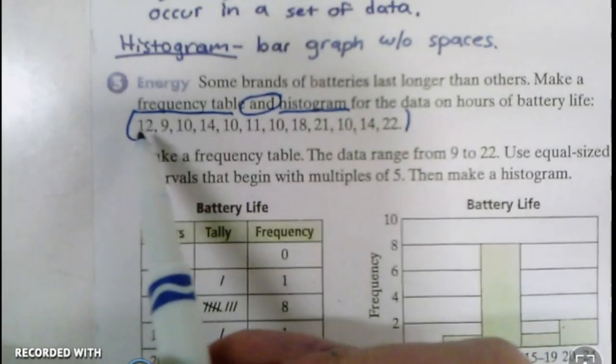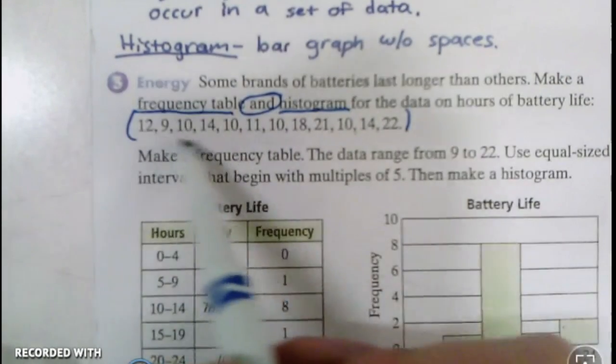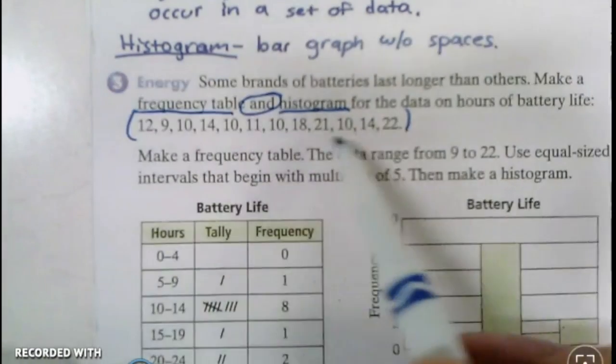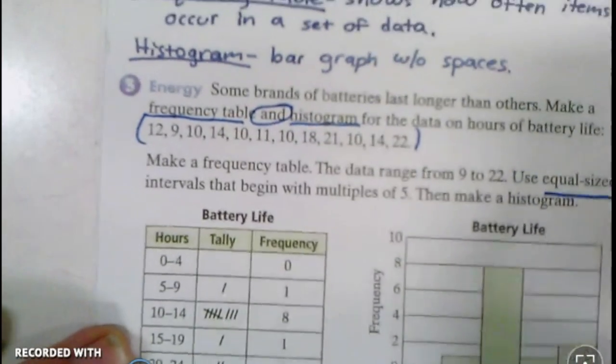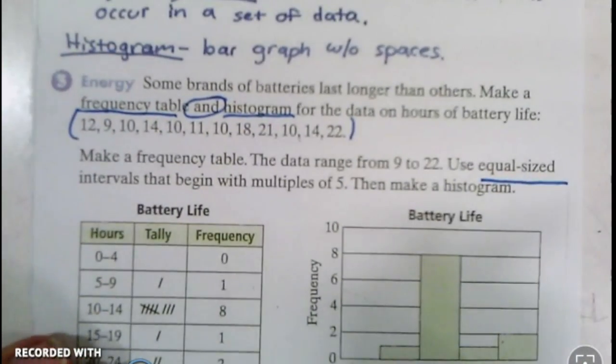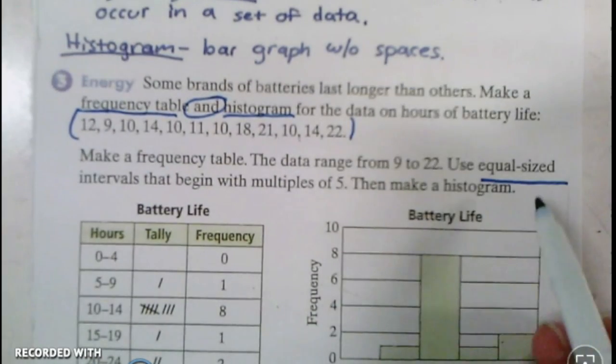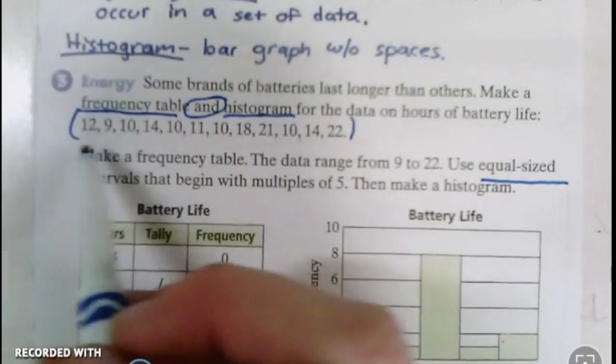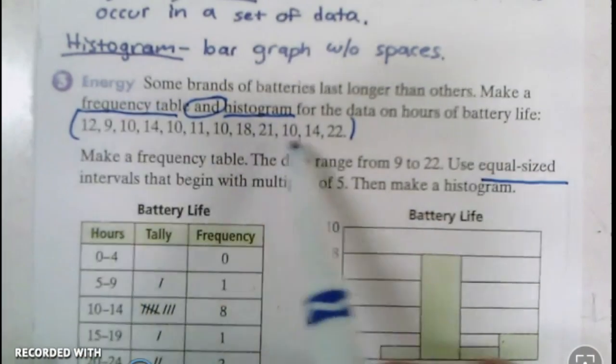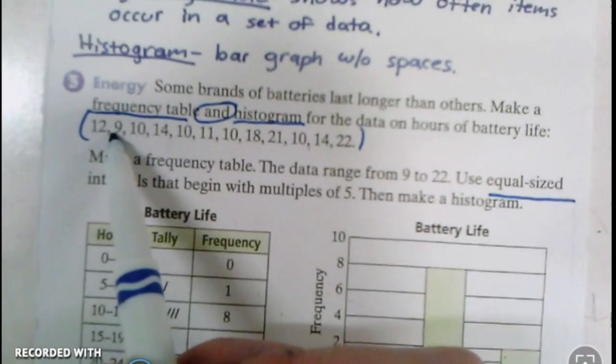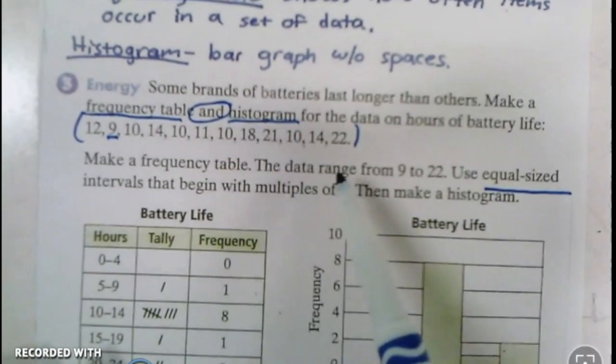The first thing they ask for is a frequency table. You're just going to draw a very simple table, then organize your data into categories, equal parts, equal sized. The first thing we do for that is look for our range. What is our smallest number that we need to incorporate, and what is our biggest number?